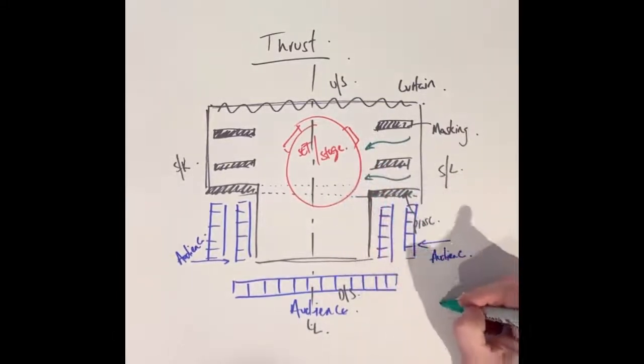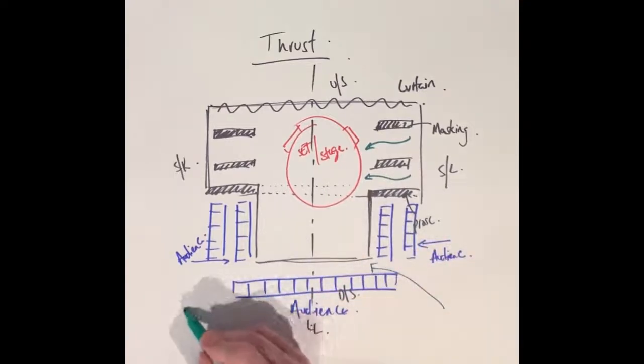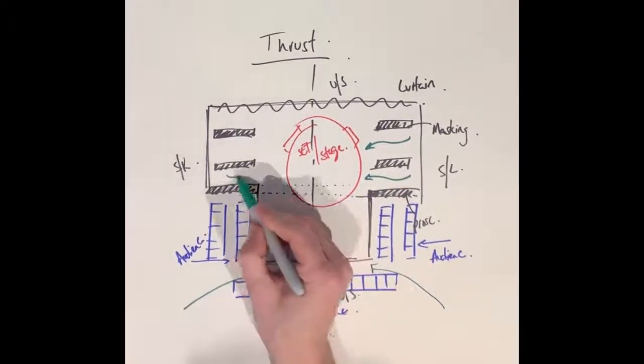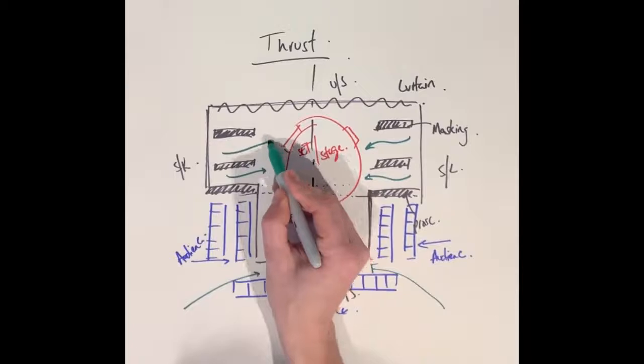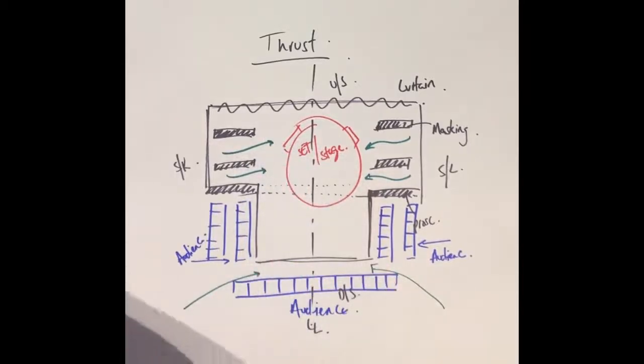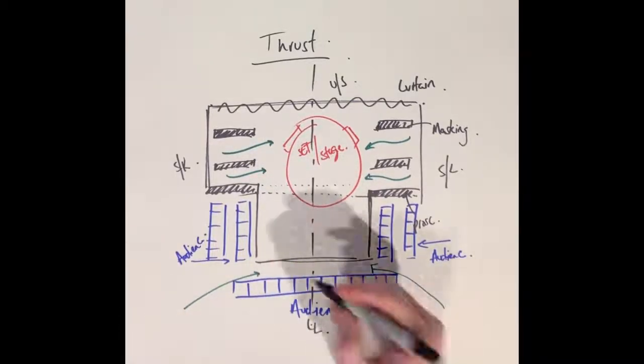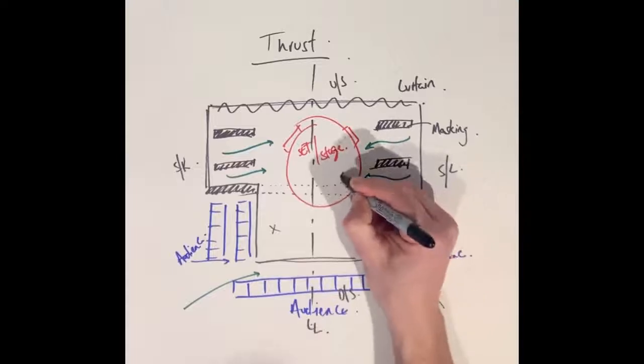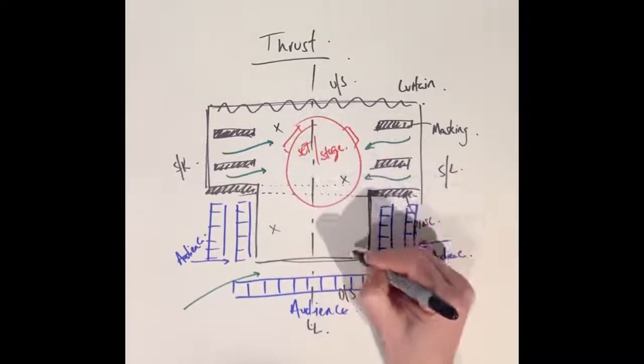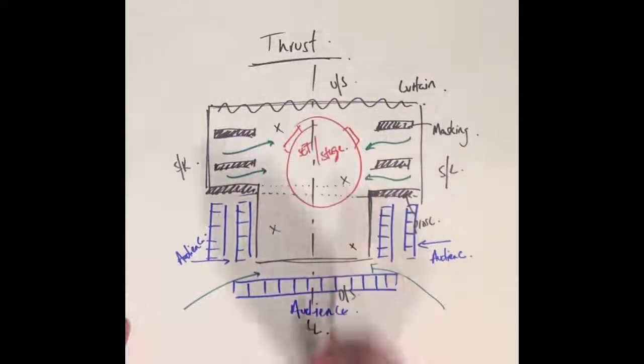With the green pen I'm now adding in entrances between the masking and also potentially between the audience. And finally, again just using crosses to show where different performers might be standing for a specific scene. And that's a thrust stage.